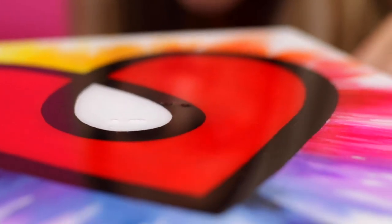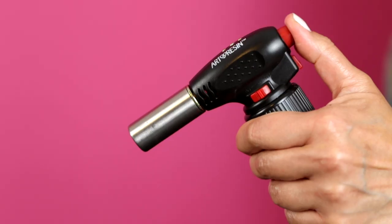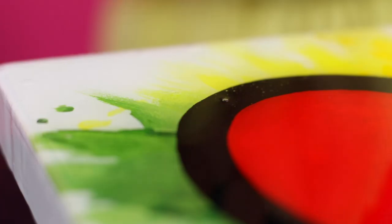After spreading the art resin, air bubbles will begin to rise to the surface. We recommend using our artist torch to pop bubbles for a flawless finish. Just hold the torch a few inches away from the surface, moving it constantly just like you would iron clothes. Pick out any hairs or dust particles with a toothpick.